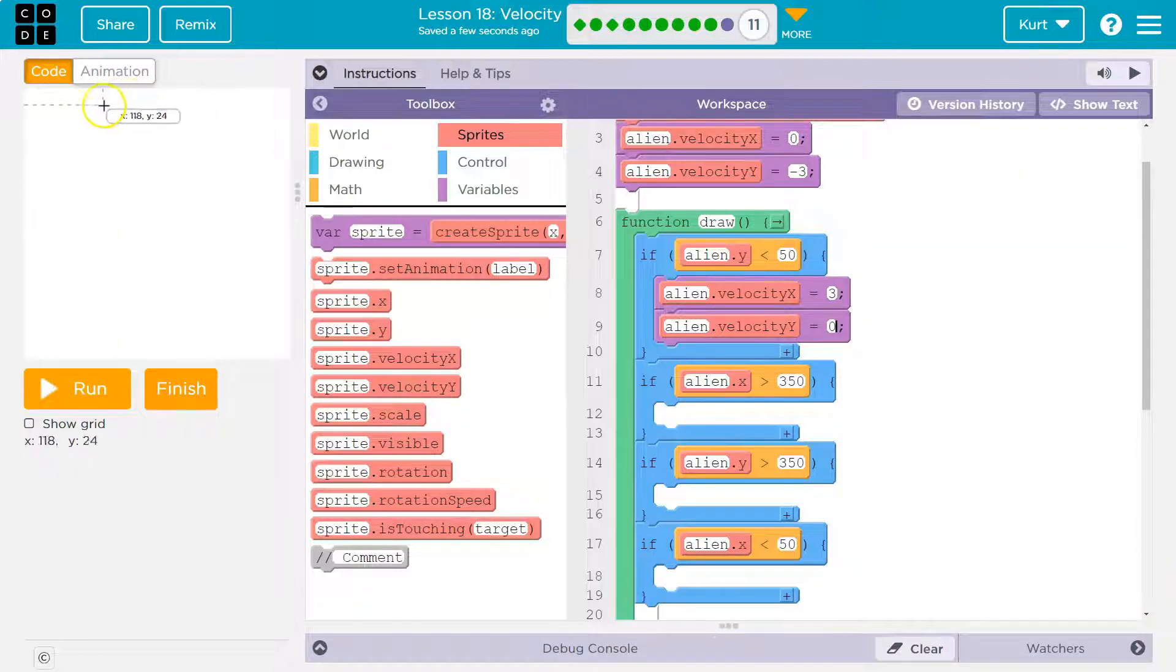Now, how about once we're over here? How would we know? Let's see. Oh, look what happens when I go over here? How do I know I'm in the corner? X becomes greater than 350. What's the next one here?